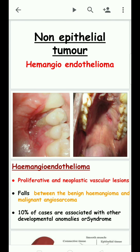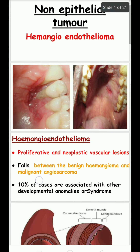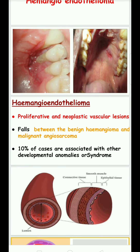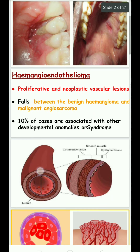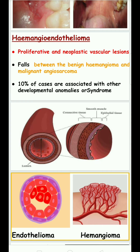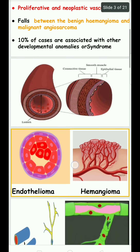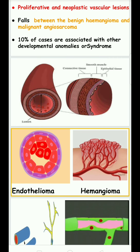Today we discuss hemangioendothelioma in non-epithelial tumors. Hemangioendothelioma is a proliferative and neoplastic vascular lesion. It falls between benign hemangioma and malignant angiosarcoma, meaning it is an intermediate lesion showing characteristics of both hemangioma and endothelioma.